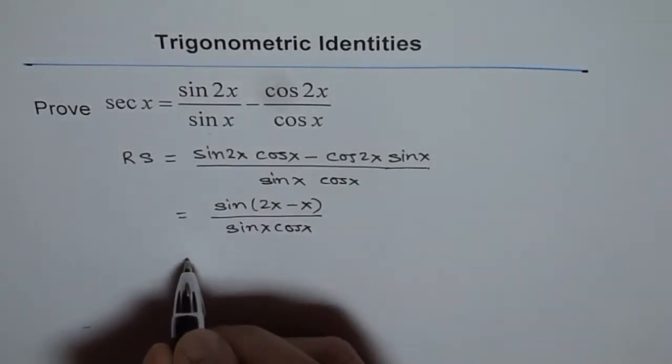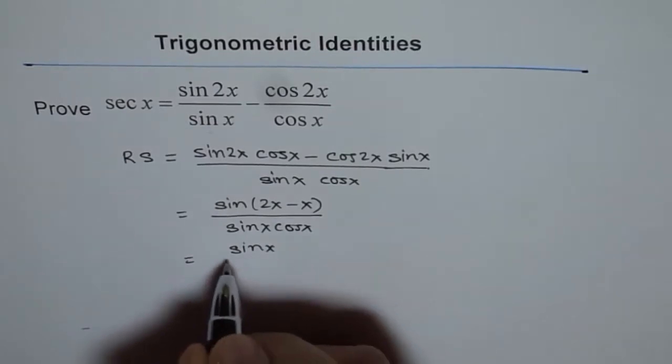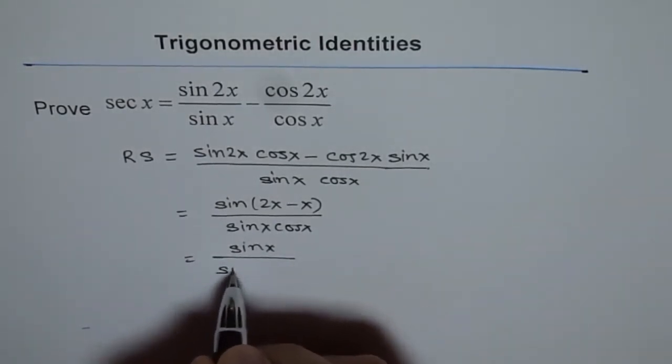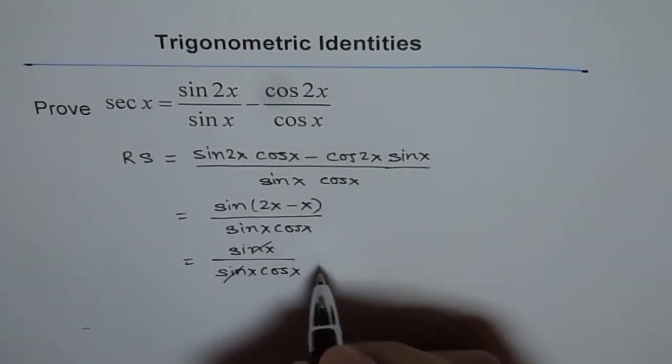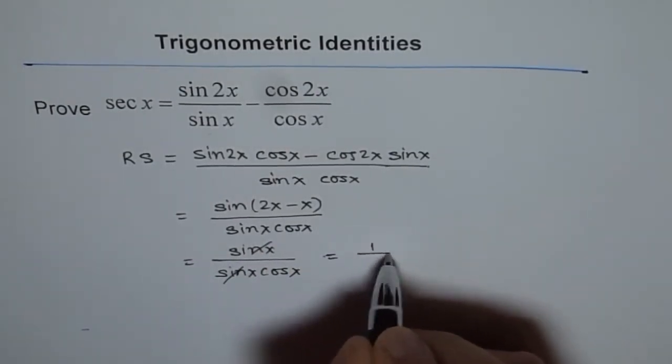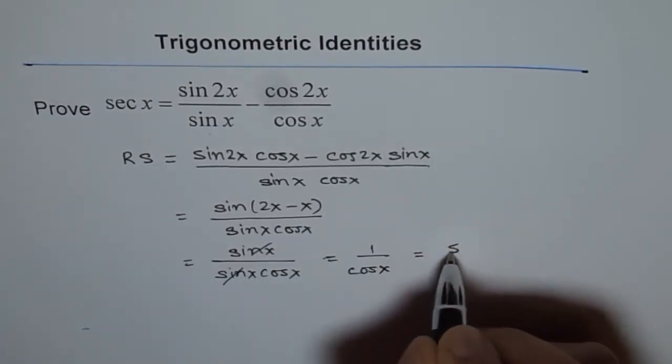That is sin x over sin x cos x. Now, sin x cancels out and you get 1 over cos x, which is secant x.